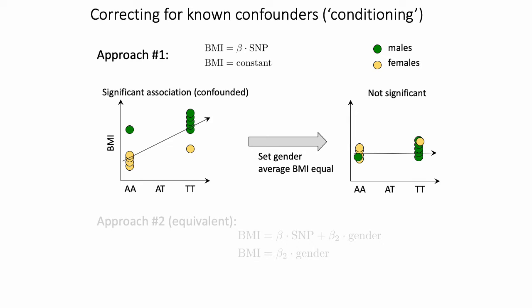Furthermore, suppose there were certain SNPs — specifically suppose the T allele, deemed the reference allele — was in a higher proportion of males than females. Then your association test might tell you that the T allele is strongly associated with BMI.